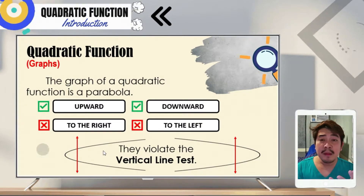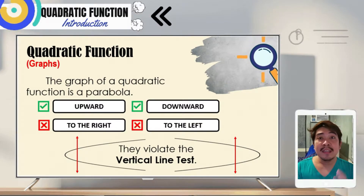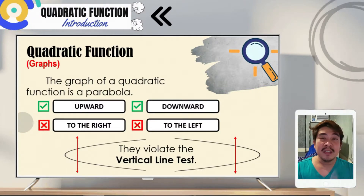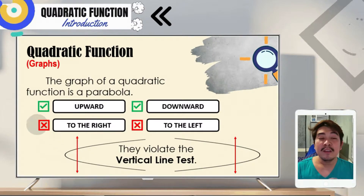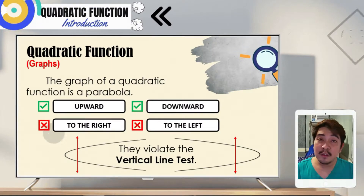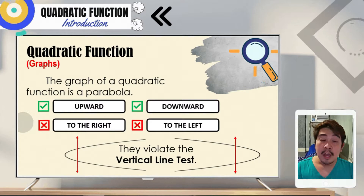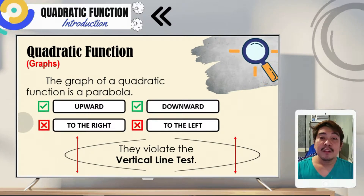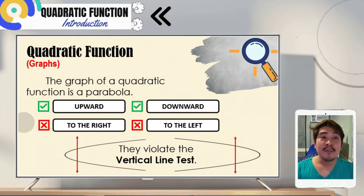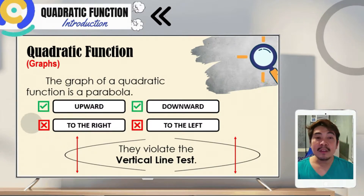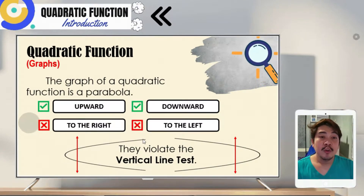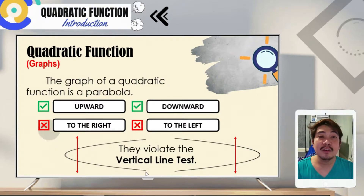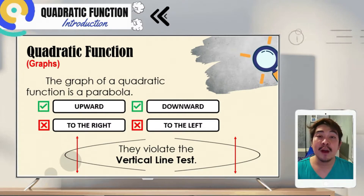We use the vertical line test to determine if a graph is a function or not. If a graph passes the vertical line test — meaning the vertical line intersects it at exactly one point — the graph is a function. That is why parabolas that open to the right and to the left are not considered quadratic functions.